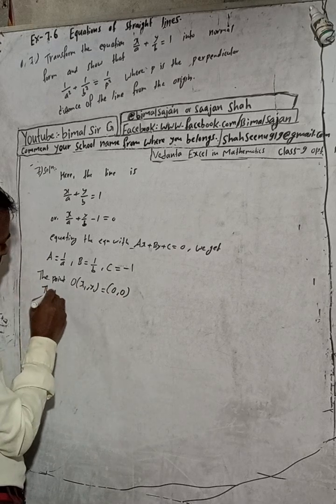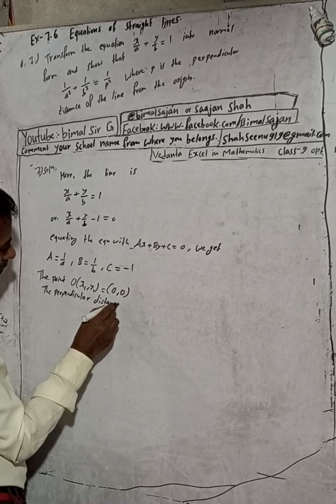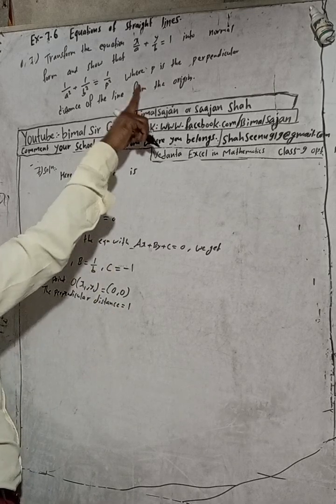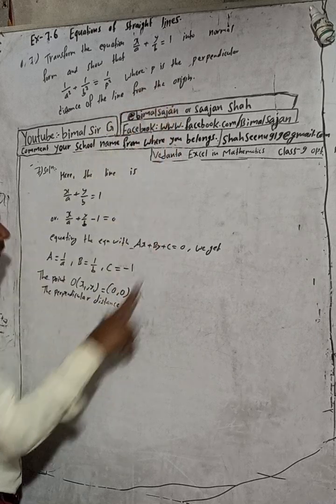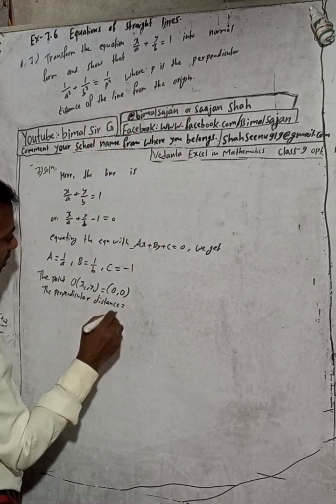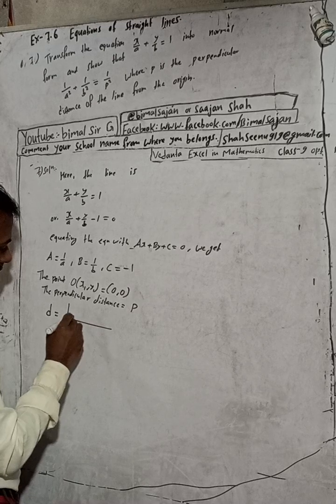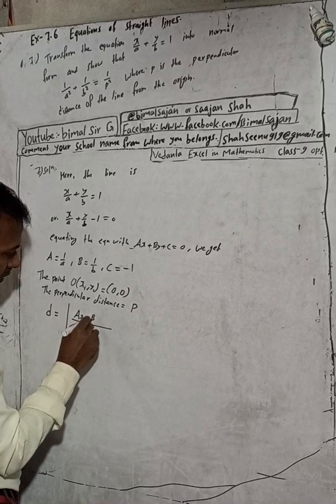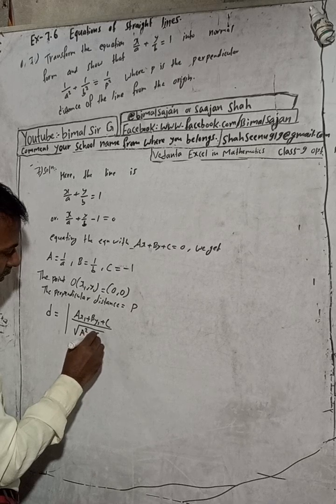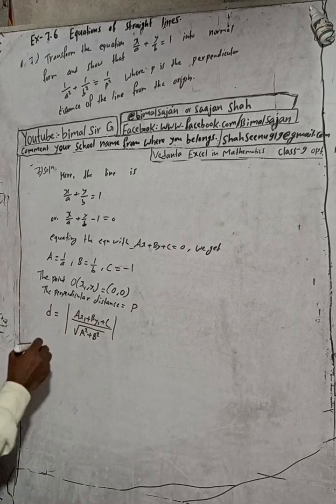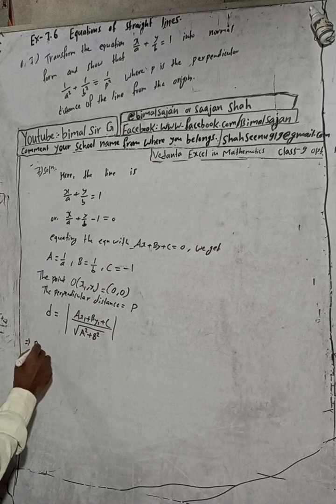The perpendicular distance is given here, where p is the perpendicular distance. And we know that the distance formula is modulus of ax₁ plus by₁ plus c, by root under a² plus b². Now here d is called distance, that means perpendicular distance here is p.